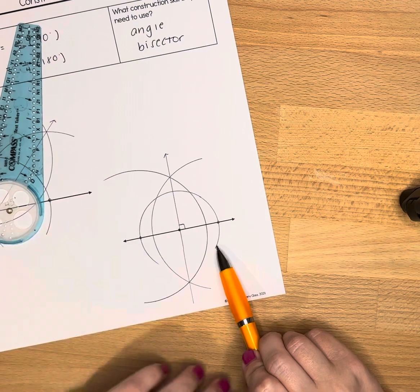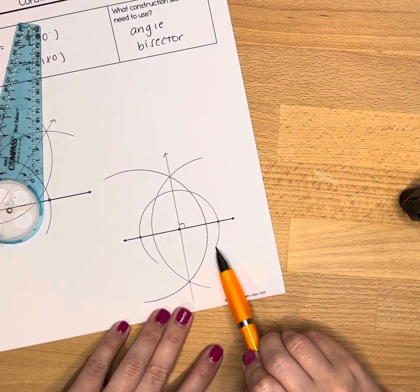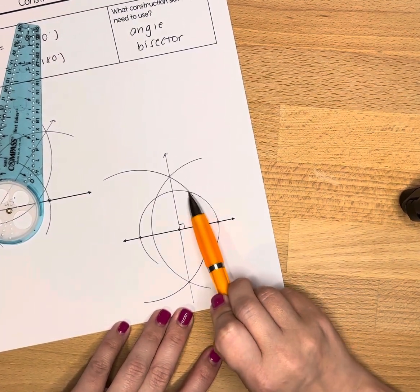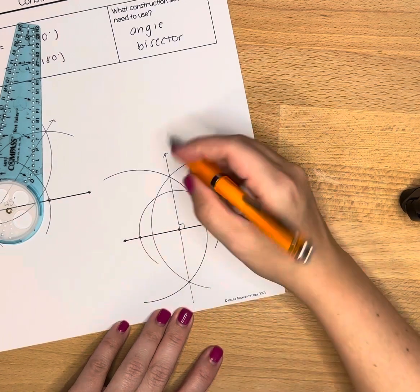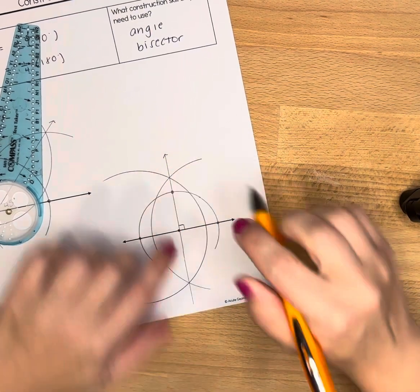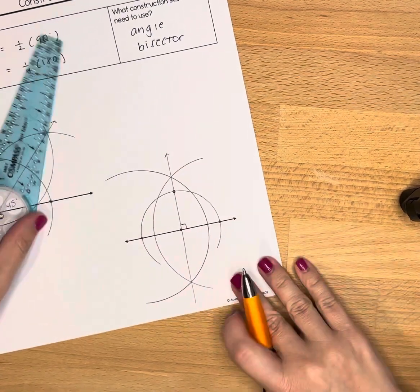You could use this arc from before. You can use this arc to be your first step, and now I have my two intersections that I'm going to use to create the bisector.